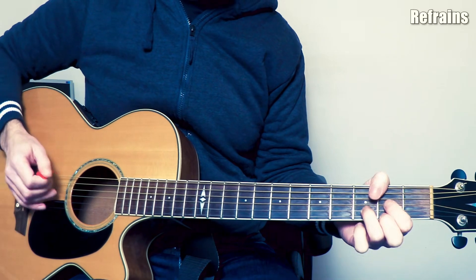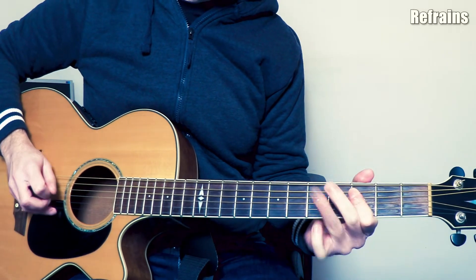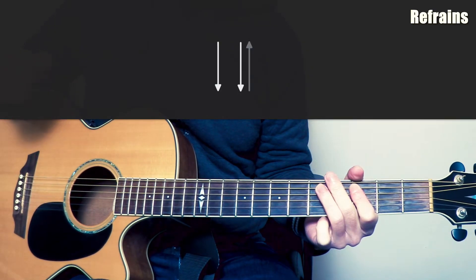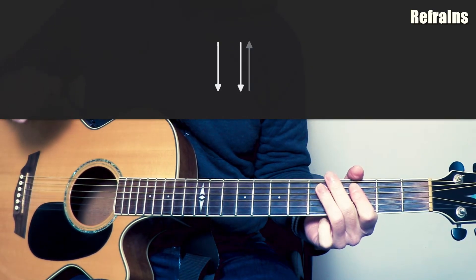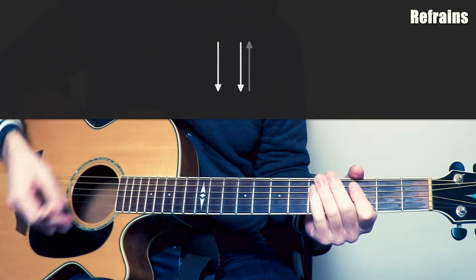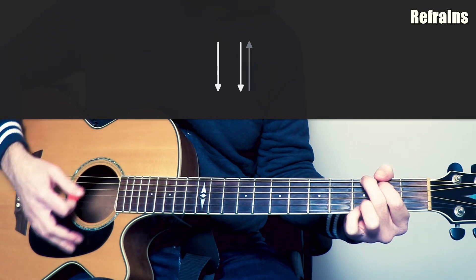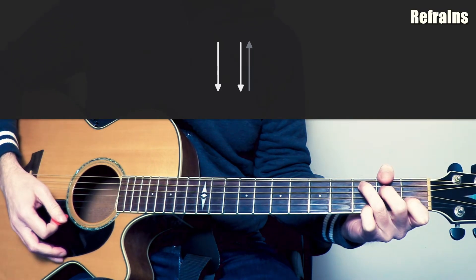Mais en fait, sur le Ré, on va le remplacer par le Ré suspendu. Et donc, sinon, pour la rythmique, en fait, sur ce refrain, pour chaque accord, on fera bas, bas. Et on fera l'enchaînement, en fait, Sol et Do. On va enchaîner ça huit fois.